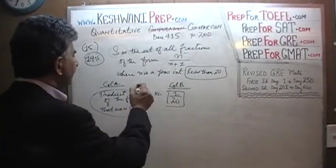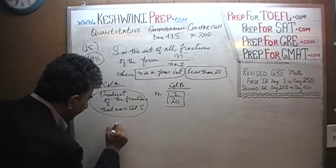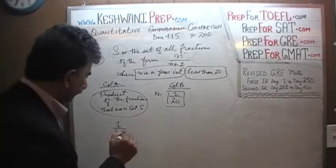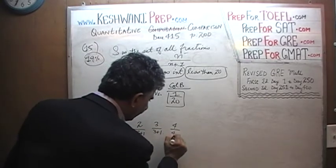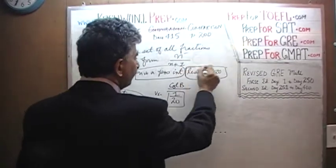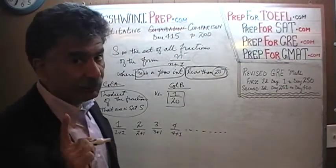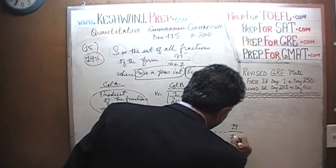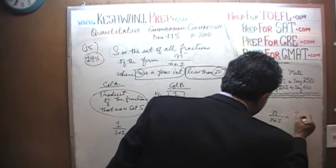Since n is a positive integer, we start with 1 — it cannot be 0 or negative. So if n is 1, the fraction is 1 over 2. The next is 2 over 3, then 3 over 4, then 4 over 5, and so on. Keep in mind that n must be less than 20 — it does not say less than or equal to — so we stop at n equals 19. The very last fraction is 19 over 20.